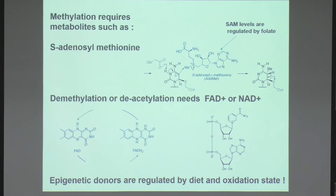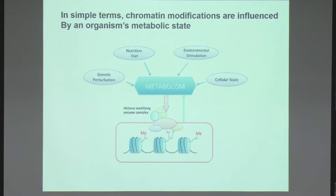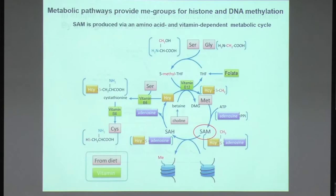Now let's go back to nutrition. Methylation requires metabolites such as S-adenosylmethionine. SAM levels are directly regulated by folate and vitamins, and SAM is the donor for methylation of both DNA and lysines. Demethylation and deacetylation reactions also need cofactors that are metabolic intermediates. In simple terms, epigenetic donors are regulated by diet and oxidative state — chromatin modifications are influenced by an organism's metabolic state.